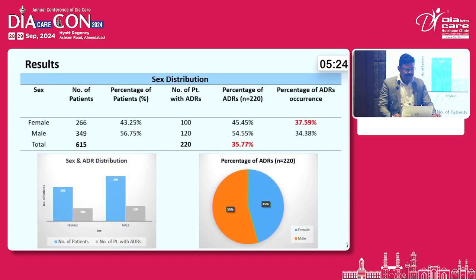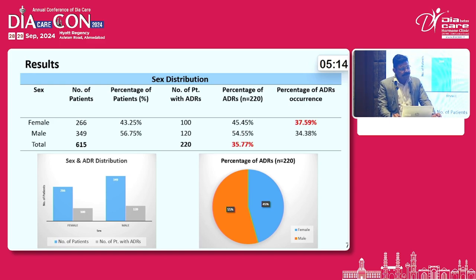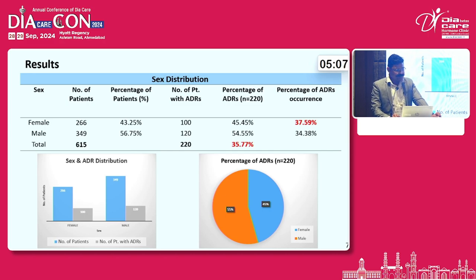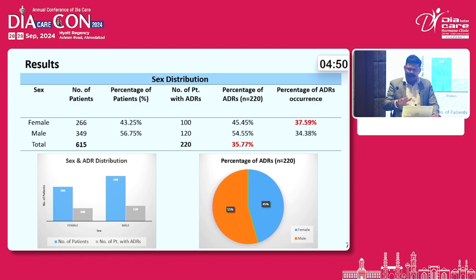With respect to results, out of 615 total patients, 220 were identified with at least one ADR. In terms of subgroups, female patients numbered 266 and male patients 349. Out of 266 female patients, 100 were identified with at least one ADR. The percentage of ADR occurrence is slightly higher in female patients.